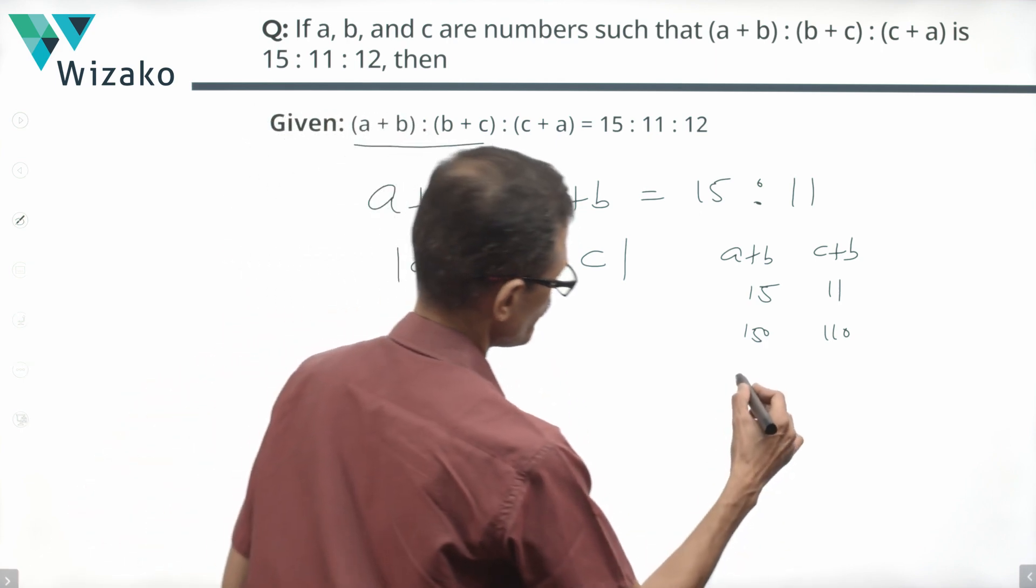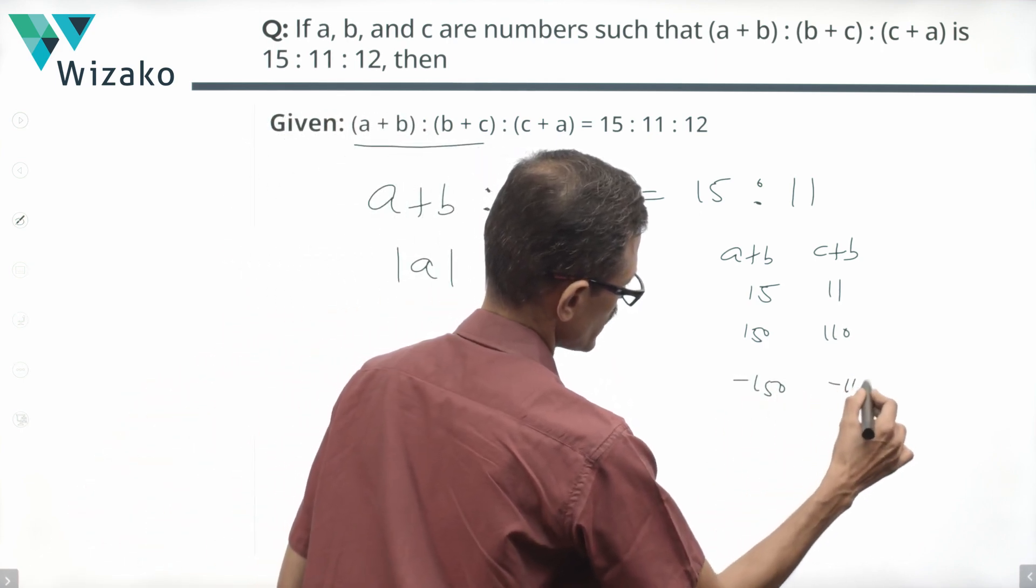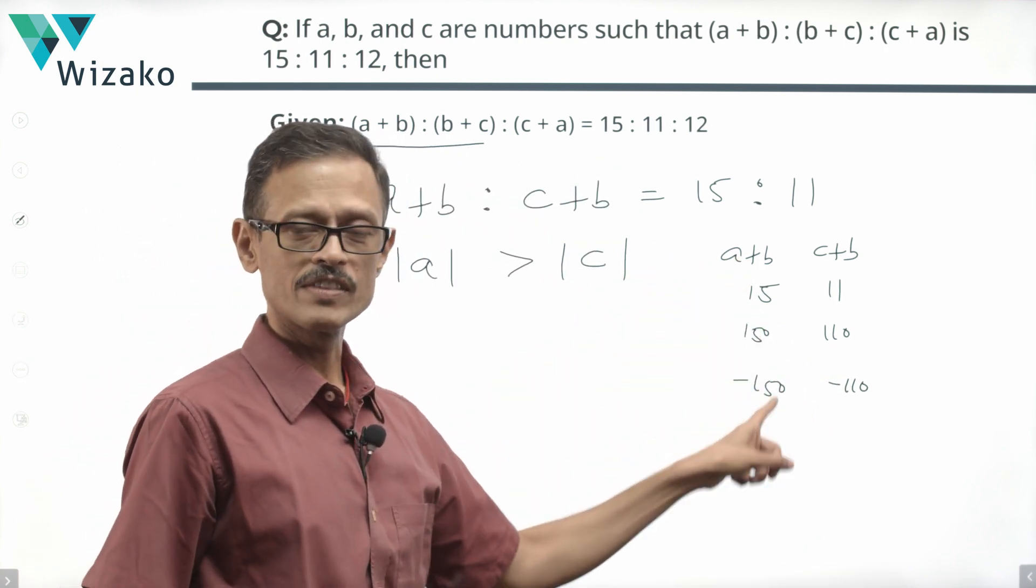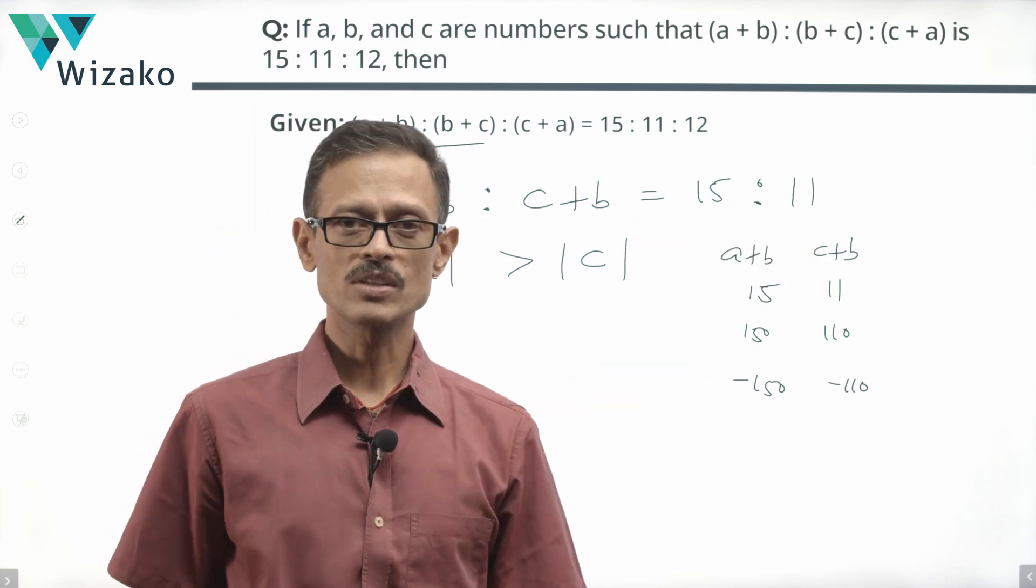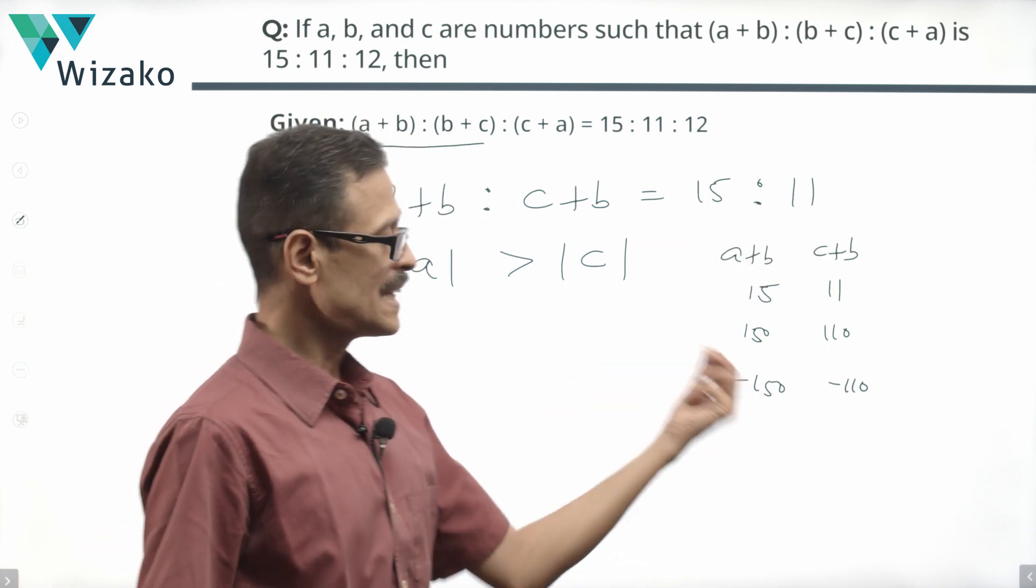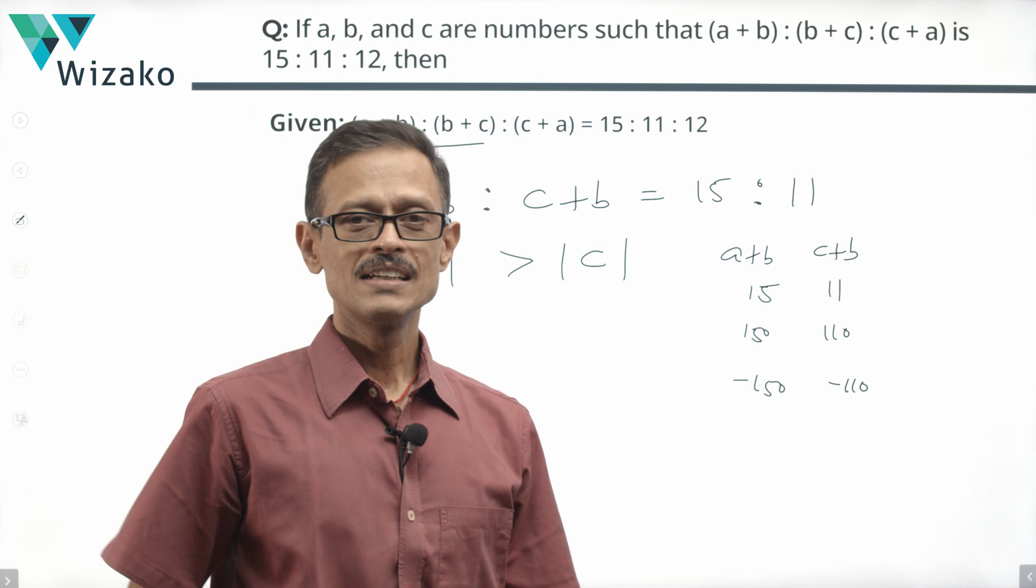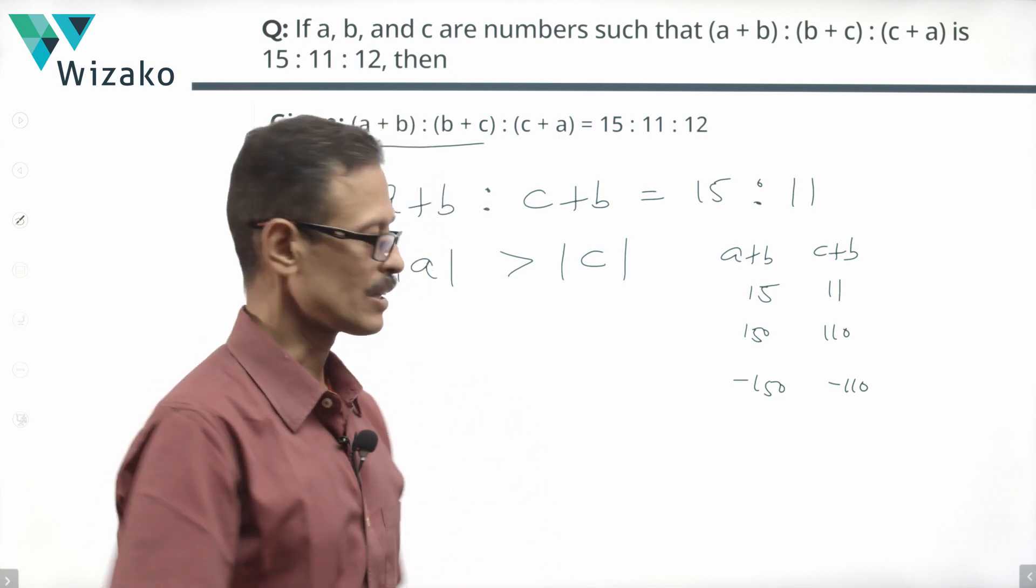What if it had been -150 and -110? Will the ratio, if a+b is -150, c+b is equal to -110? Is the ratio going to be still 15:11? Yes. In negative numbers, how does it behave? Larger the magnitude, lesser the value. Let's look at the number line.